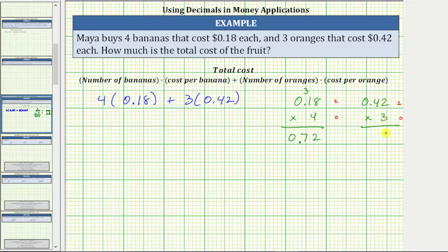Multiplying we have three times two, which is six. Next we have three times four, which is 12. Starting on the right, move the decimal two places to the left. The product is 1.26, meaning the oranges cost $1.26.